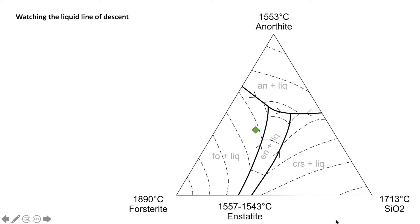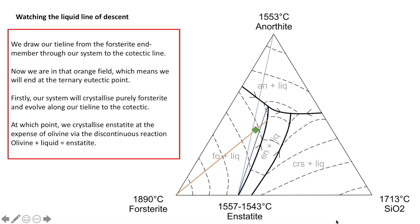Let's take a look at an example if we start in that yellow field. We draw the lines to show that we're sitting in that yellow field and we draw a line between our end member and our current system. Our system is going to crystallise purely forsterite until it hits the cotectic line between forsterite and enstatite.